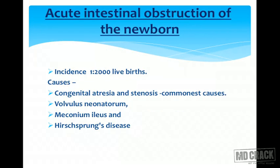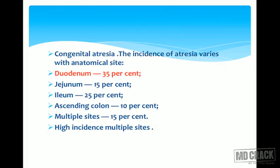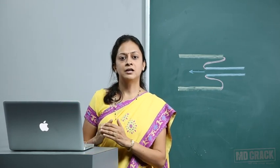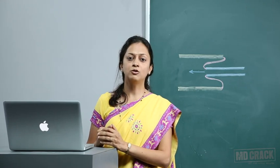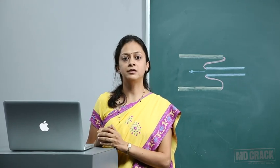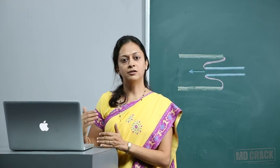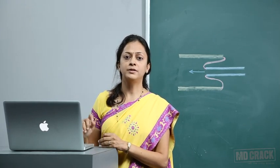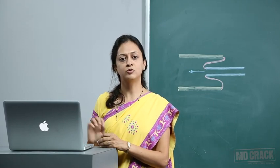Acute intestinal obstruction of the newborn has an incidence of 1 in 2,000 live births. Causes include congenital atresia and stenosis, volvulus neonatorum, meconium ileus, and Hirschsprung's disease. Congenital atresia varies depending on the anatomical site, starting from the duodenum, which is the commonest site for intestinal atresia. The commonest question asked is which is the most common type of atresia — the answer is duodenal atresia.